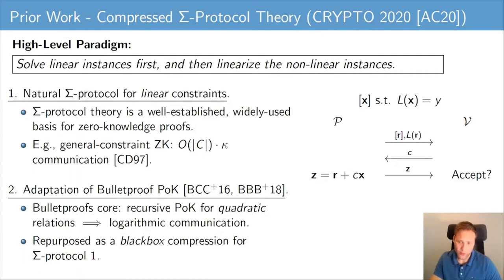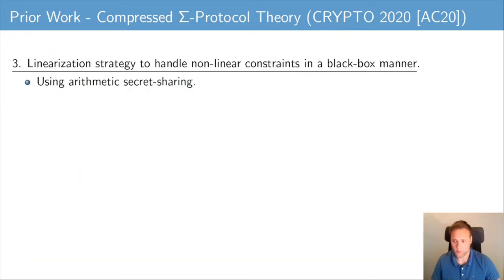In compressed sigma protocol theory, the communication complexity of this natural sigma protocol is compressed from linear down to logarithmic by applying an adaptation of a bulletproof proof of knowledge. The bulletproof proof of knowledge is a recursive proof of knowledge for a certain quadratic relation, adapted and repurposed as a black-box compression mechanism for the sigma protocol for linear relations. The resulting compressed sigma protocol still only allows a prover to prove a linear constraint, but an arithmetic secret sharing scheme is used to linearize nonlinearities, after which the compressed sigma protocol can be used in a black-box manner.